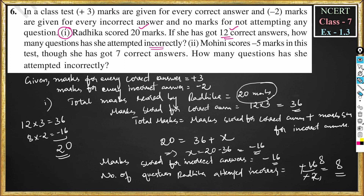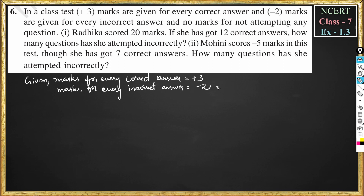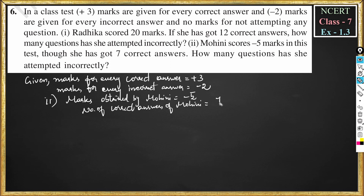Now problem 2: for the same test, Mohini scores −5 marks. Though she got 7 correct answers, how many questions has she attempted incorrectly? Marks for every correct answer = +3, marks for every incorrect answer = −2. Marks obtained for correct answers = 7 × 3 = 21 marks.